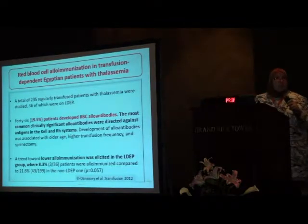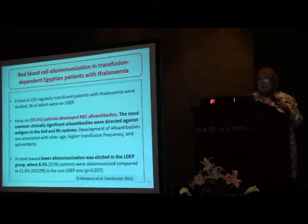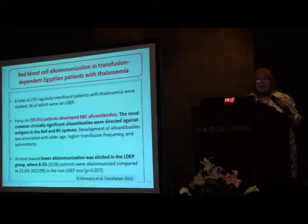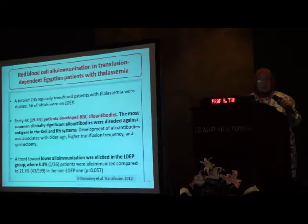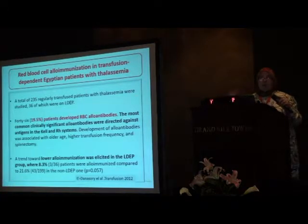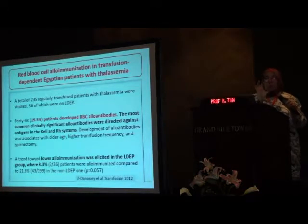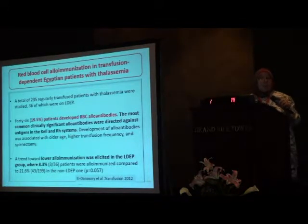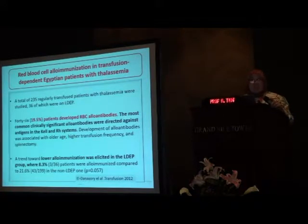What is the situation in Egypt? I referred to three papers, two done in our department. One worked on 235 patients with thalassemia, and the prevalence of red cell alloantibodies was 19.5%, mainly against the Kell system and the RH system. A Limited Donor Program was established, and in that group the prevalence of alloantibodies dropped to 8.3%. So the Limited Donor Program is associated with less development of alloantibodies.